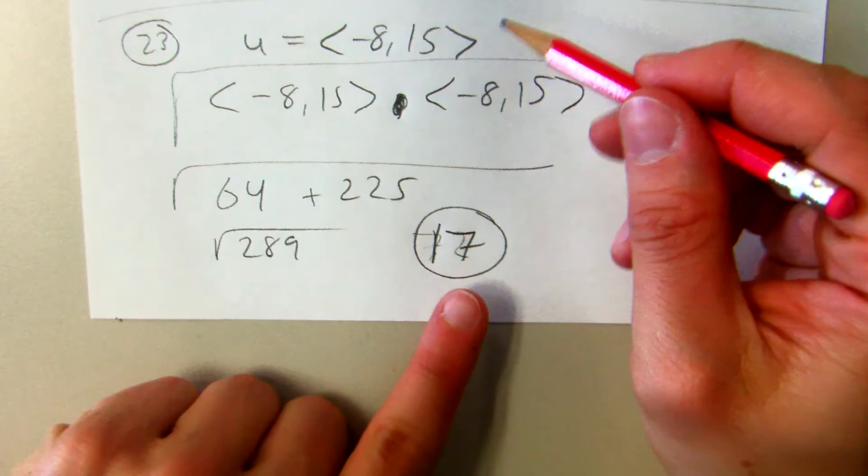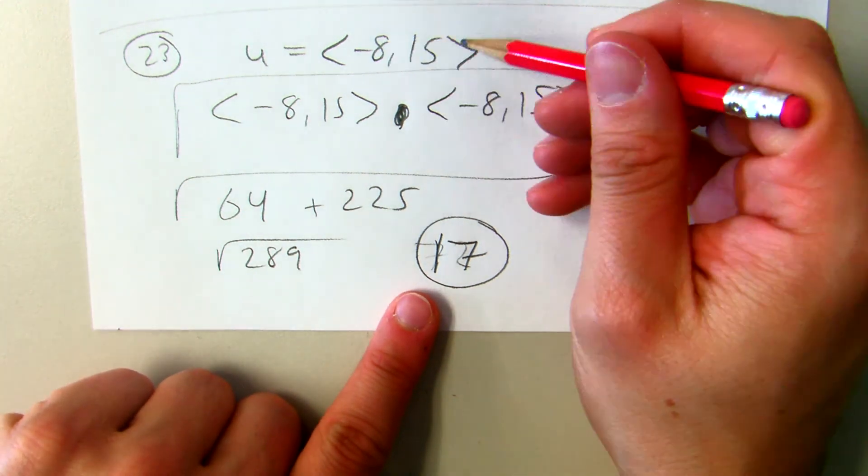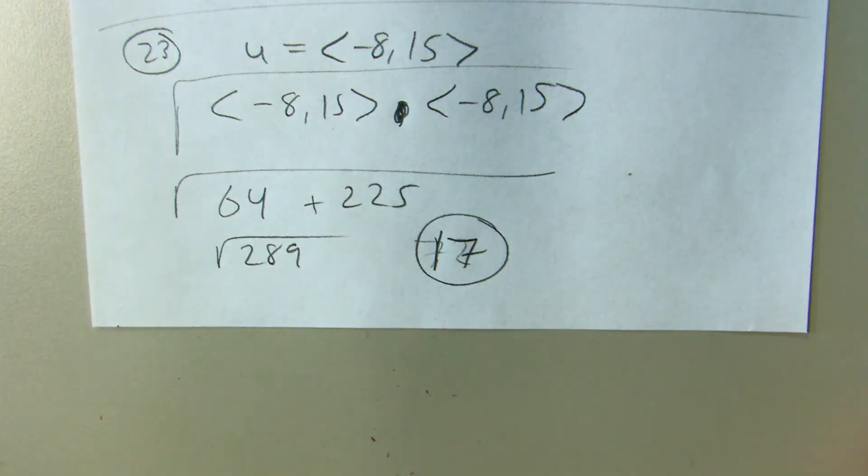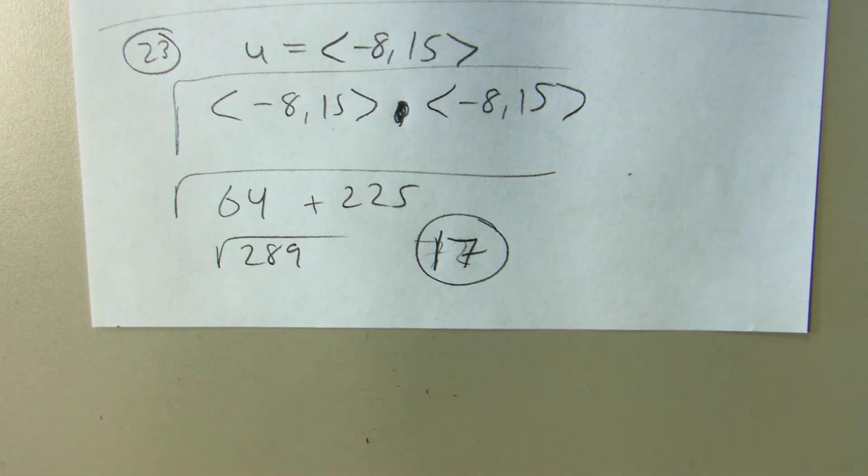I probably should have known that. So the way I said, I've heard the Pythagorean theorem, but this would be an 8, 15, 17 triangle. But that's how you can do it. Really about the same amount of work.